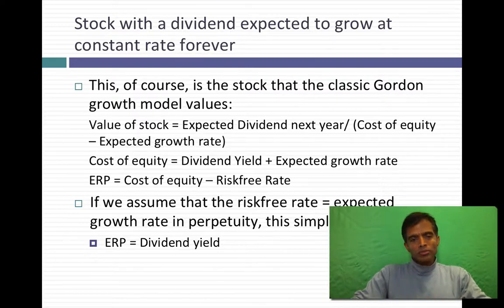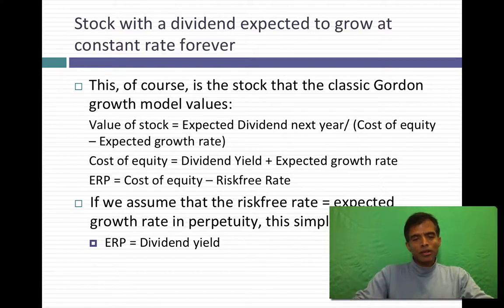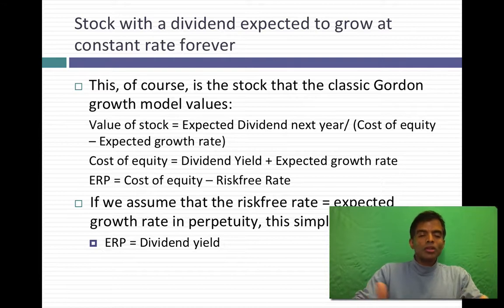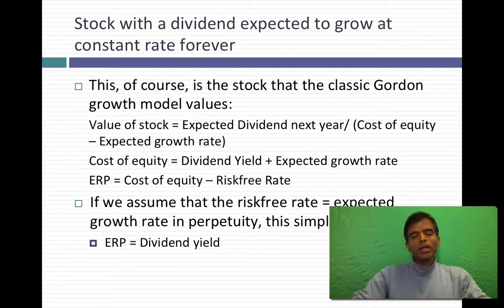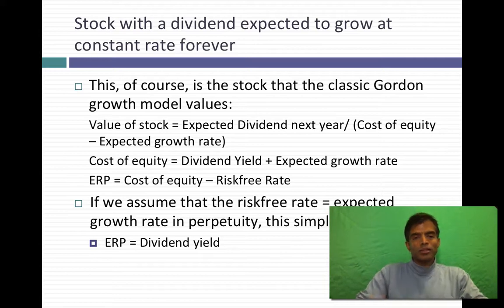If you do a little algebra on the Gordon Growth Model, your cost of equity can be written as the sum of two variables: the expected dividend yield — the expected dividend divided by the stock price today — plus the expected growth rate. Once you have that, you subtract out the risk-free rate to get the equity risk premium. For example, if the dividend yield was 2% and expected growth was 5%, your cost of equity would be 7%, and subtracting the risk-free rate gives you an implied equity risk premium.